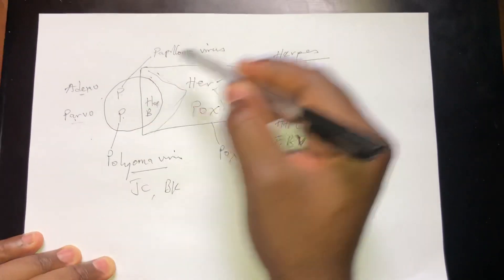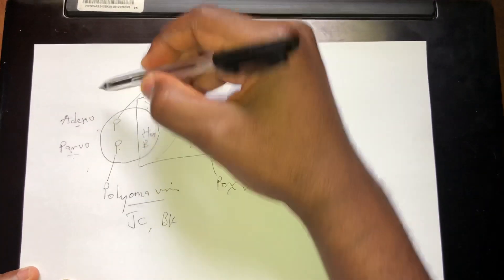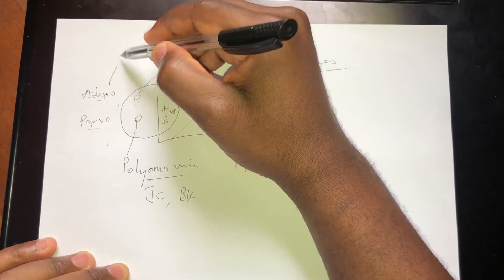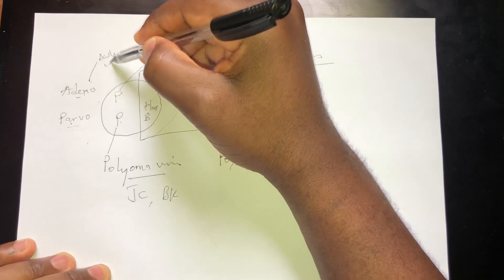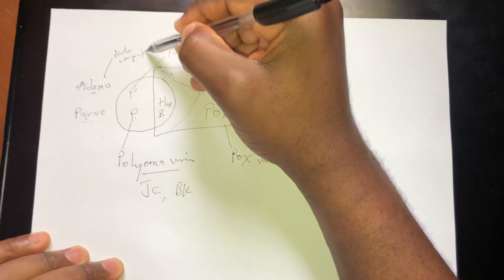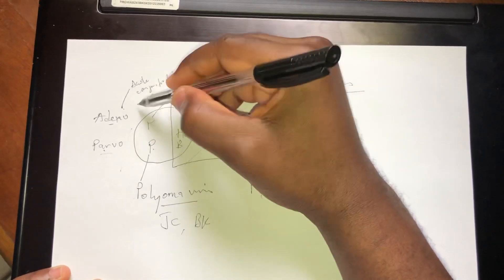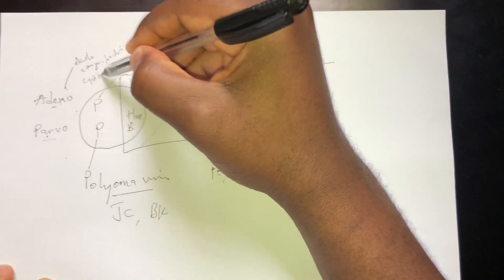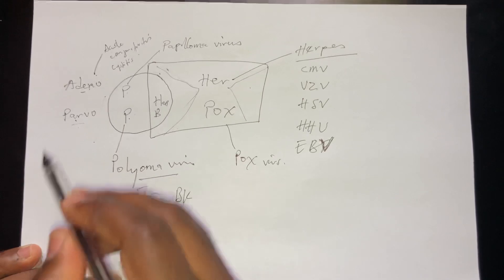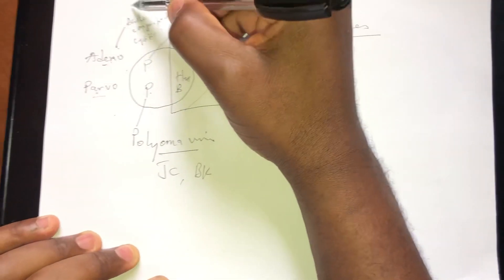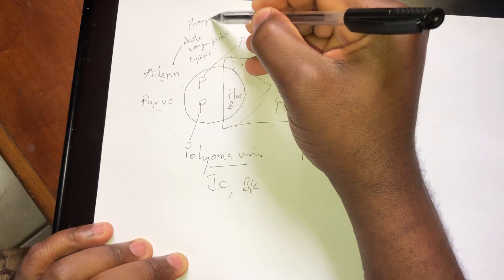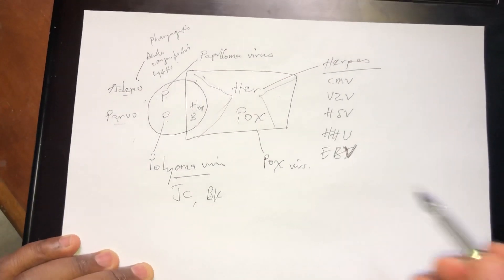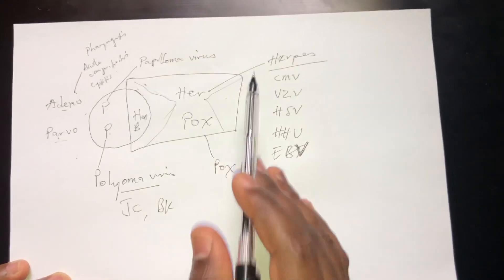So when we look at the Adenovirus, it can cause acute conjunctivitis, viral cystitis, and pharyngitis. These are just some details I want to add — they are all in First Aid and you can see it there.